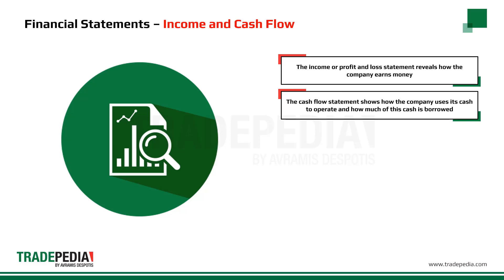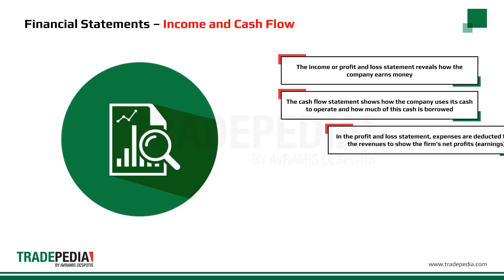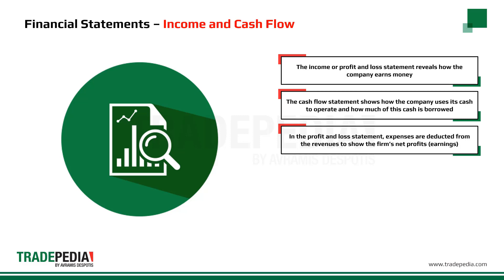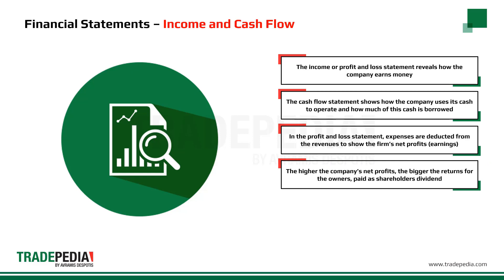The cash flow statement shows how the company uses its cash to operate the business and how much is borrowed from banks or bondholders. In the profit and loss statement, expenses such as operational expenses, interest expenses, or taxes are deducted from the company's total revenue to show the firm's net profits. The higher the company's net profits, the bigger the returns for the owners, paid as shareholders' dividend.